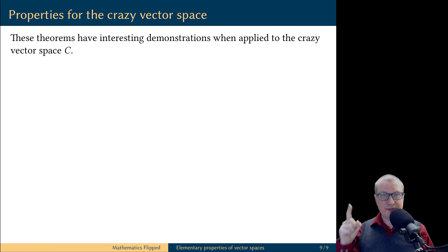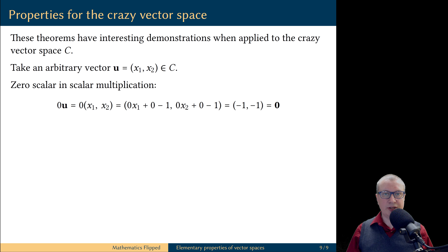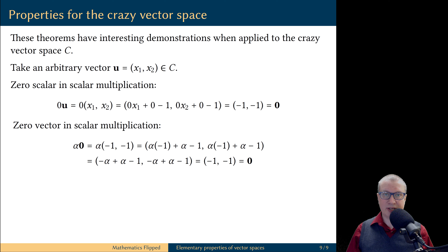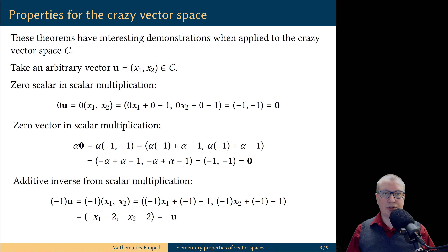Remember the crazy vector space from the last video? Let's illustrate these properties using it. Objects in this space are ordered pairs of numbers, and its zero vector is the pair (−1, −1). First, taking an arbitrary vector u scaled by zero scalar yields (−1, −1) — the zero vector — as expected. Next, scaling the zero vector (−1, −1) by any scalar α also gives (−1, −1). Finally, the additive inverse of a vector is confirmed to equal that vector scaled by negative 1. These all hold even in this crazy vector space, which is no miracle — we proved these properties must hold for every vector space.